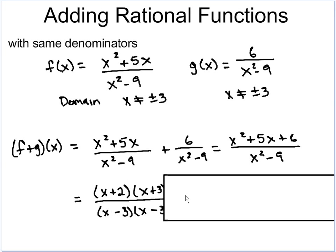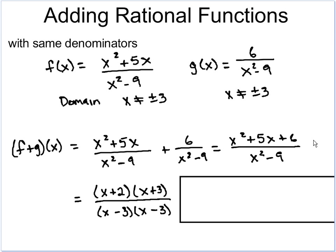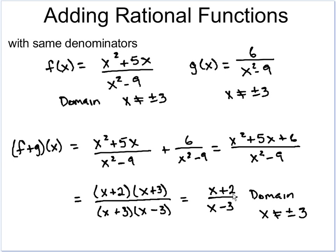If we look at the numerator, we can factor x² + 5x + 6 into (x + 2)(x + 3). We can factor the denominator into (x + 3)(x - 3). Since we have an (x + 3) on the top and the bottom, we can cancel those out, and we're left with (x + 2) / (x - 3). Now your domain is still x cannot equal positive or negative 3 — just as with multiplication and division, the domain of the original functions must be represented in the domain of the final function.